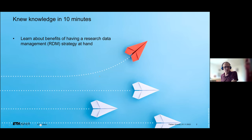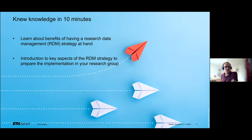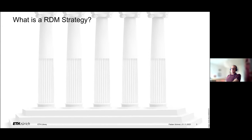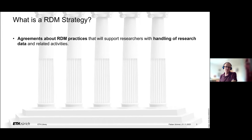I will first show you some benefits of having a research data management strategy at hand in a research group or beyond. And then we will also introduce some key components of a strategy. So what is a research data management strategy? Basically, it's agreements about research data management practices. You stipulate among members of a certain organizational unit — the lowest unit would be a research group — and there you will define and try to streamline handling of research data and related activities.